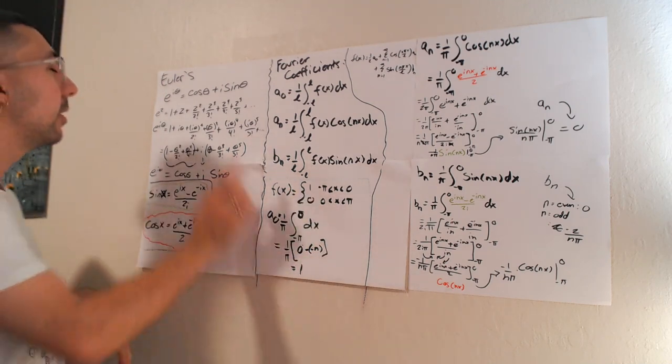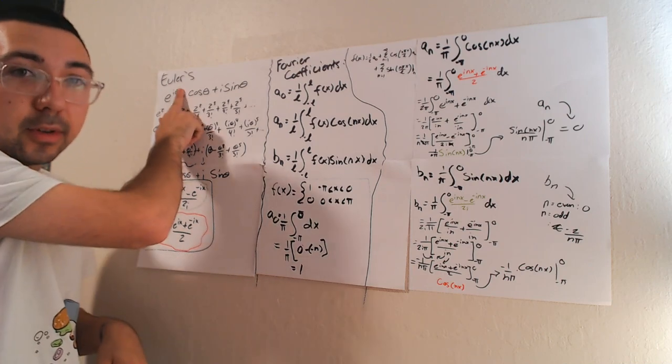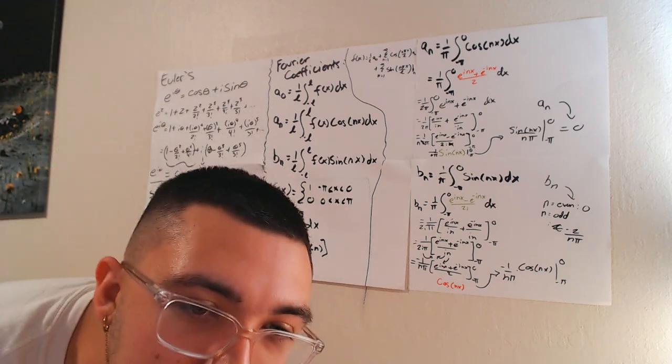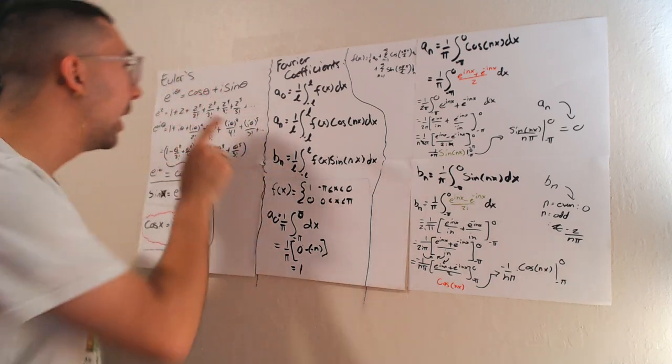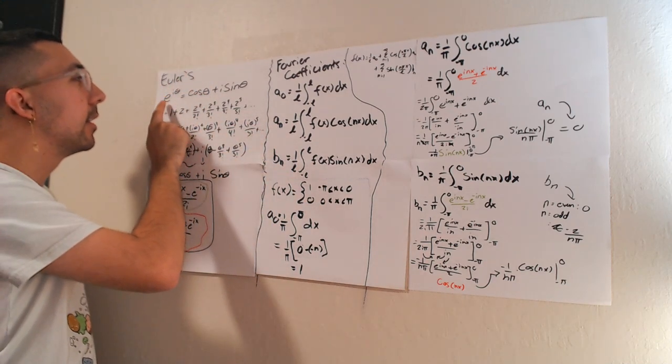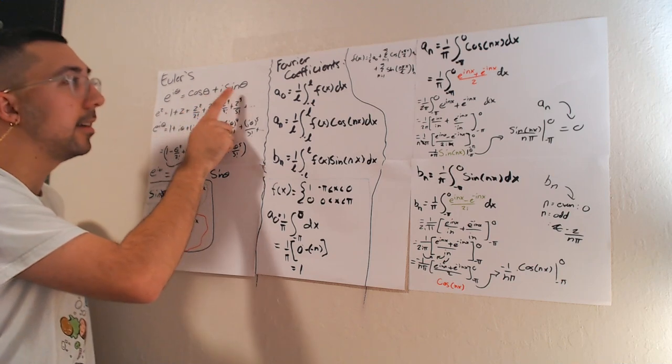Basically where we're going to start is Euler's formula. Basically it says e to the i theta is equal to cosine theta plus i sine theta.